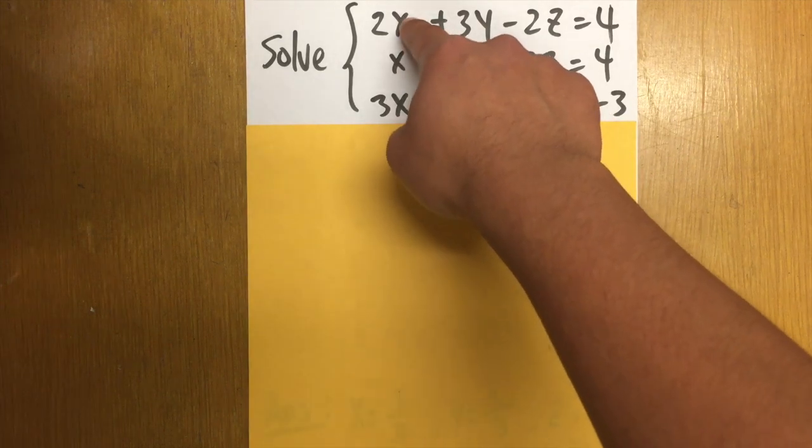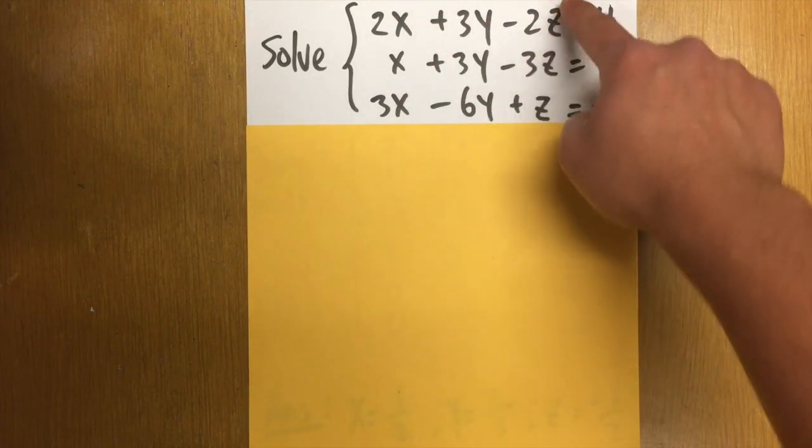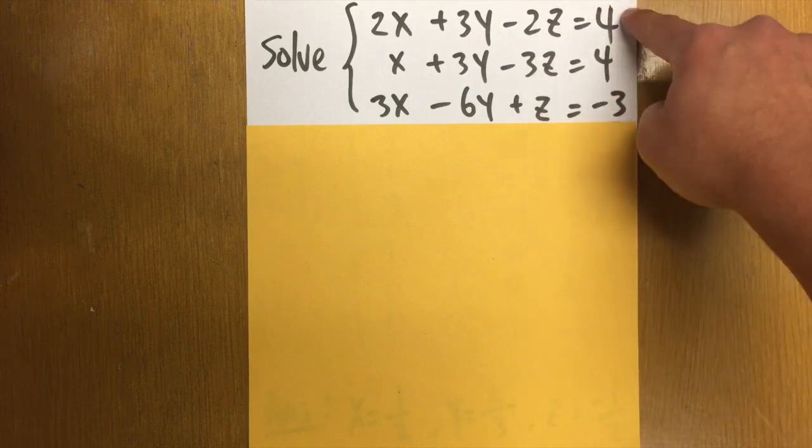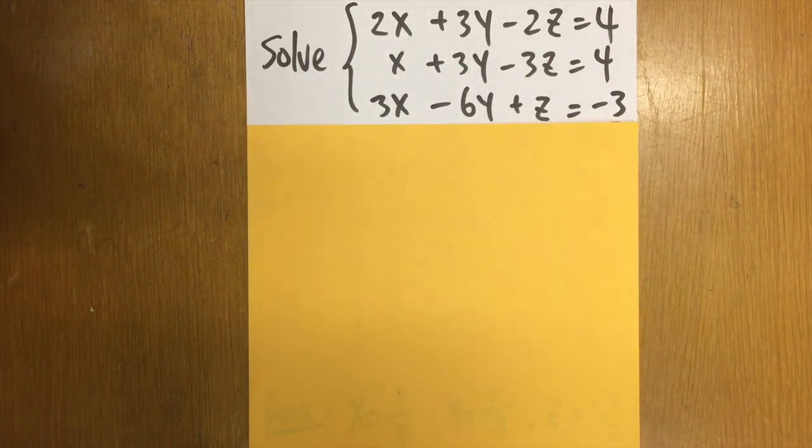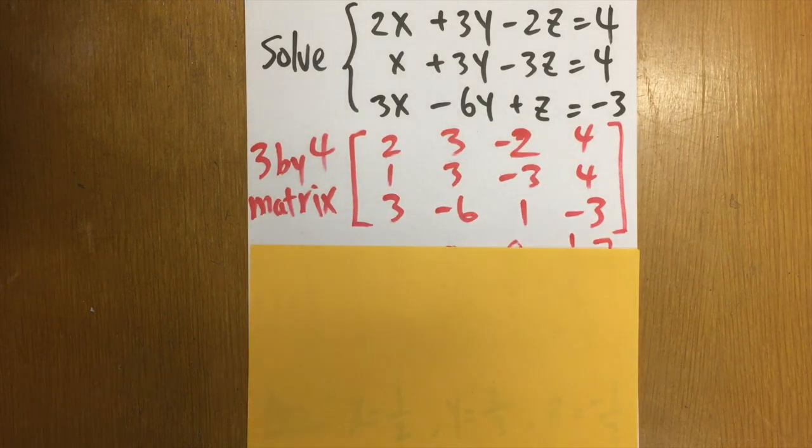To do that, first we see that we have to line up all the x, all the y's, all the z's, all the equal signs, and all the numbers. And then we just have to write down the coefficients. And we'll end up with this 3x4 matrix.